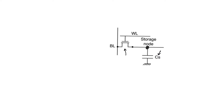Assume we want to store a zero. We drive a value of zero volts on the bit line, then enable the word line by raising it high. This causes the access transistor to turn on and discharges the storage capacitor, storing zero volts on it. When the word line is disabled again, this zero volt value is maintained on the storage capacitor Cs in a high-impedance state.